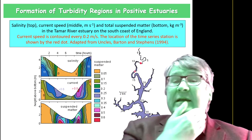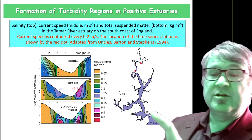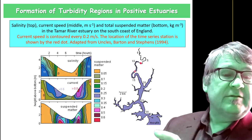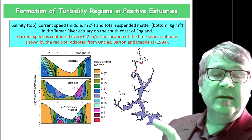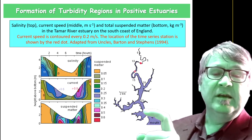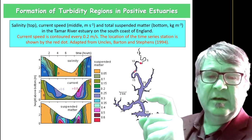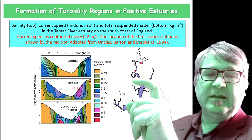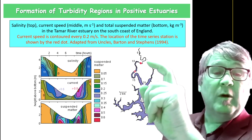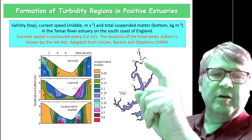This is another example. In the Tama River estuary on the south coast of England, the structure of this estuary is shown on the right side — a top view. You can see the main estuary channel with salinity levels marked: 30, 25, 20. There are sub-estuaries, which are the side arms of the estuary, with levels of 20, 15, and then the region between 10 and 5, which is quite upstream — around 20 kilometers from the ocean.